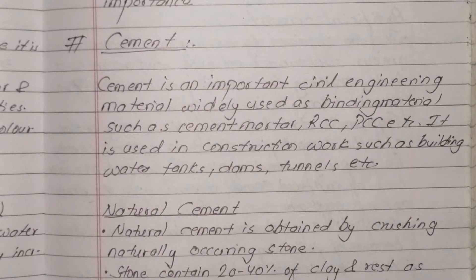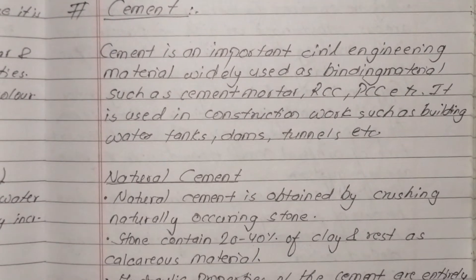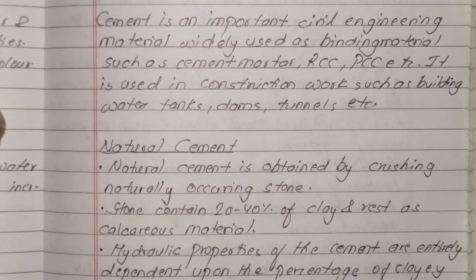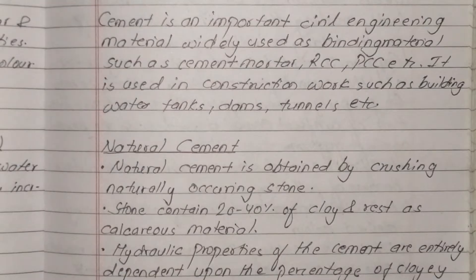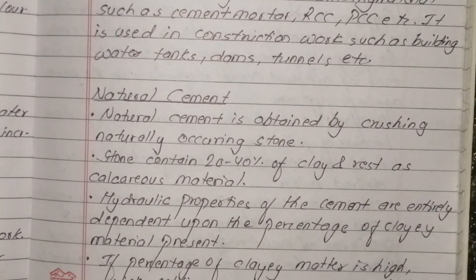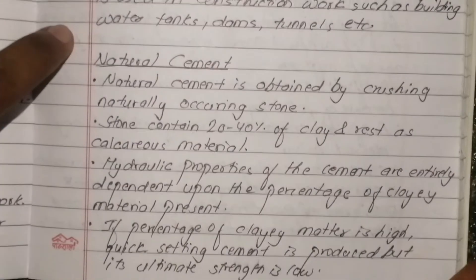Natural cement is obtained by crushing naturally occurring stones. The stone contains 20-40% of clay and the rest is calcareous materials.